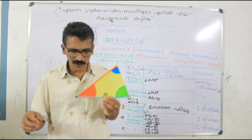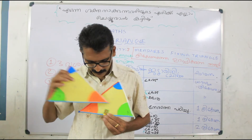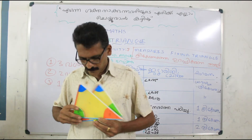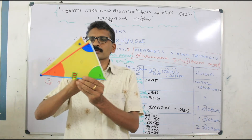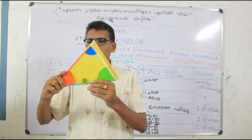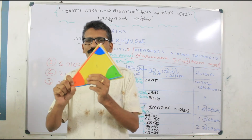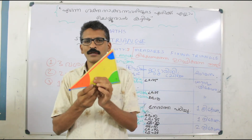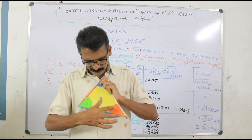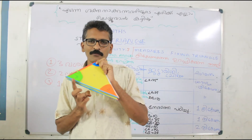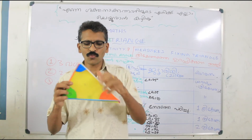If we interchange these two — the orange becomes here and the green here — we get another triangle. But these two triangles are equal; they are the same. So only one triangle can be formed. When we fix the angles and the arm measure between the angles, we will get only one triangle.